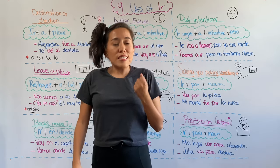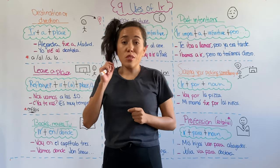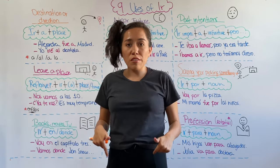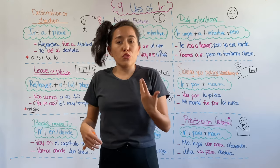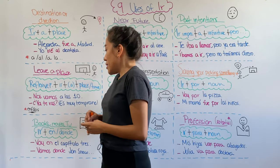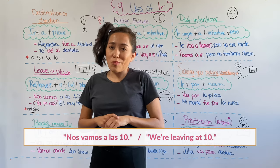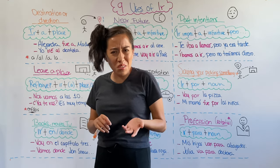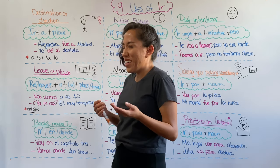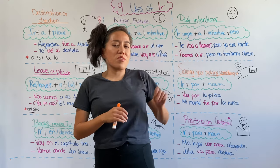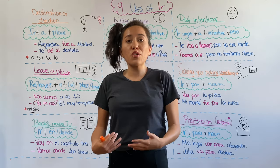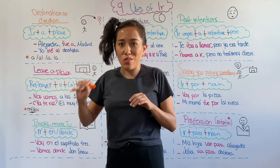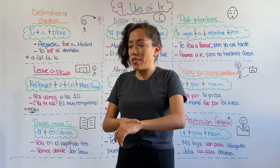The fourth use is also very useful in Spanish. You're going to use ir to emphasize that you're leaving a place. To do this, you're going to use reflexive pronouns. For example, nos vamos a las diez — don't be late, we're leaving at ten. Or ya te vas, es muy temprano — are you leaving? It's too early, the party is just starting. In this case, you can add additional information such as the place you're leaving, so you can go to that place, or the time that you're leaving.